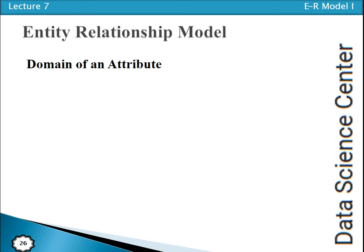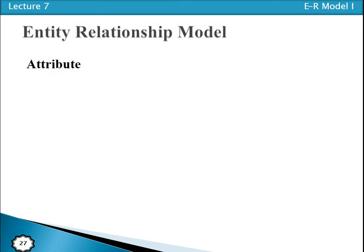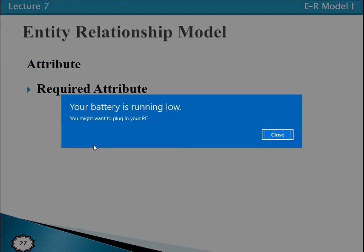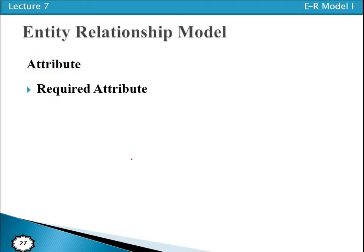Now we have the domain of an attribute. The set of possible values for an attribute is called its domain. The domain can be used for boundary checks. Each entity in an entity set gets a value from the same domain. Attributes can be required or optional. A required attribute is one that must have a value for every entity instance — that is a required attribute. An optional attribute may not have a value for every entity instance; an attribute without a value is said to be null, and that attribute has a NOT NULL constraint for required ones.